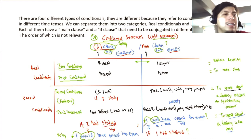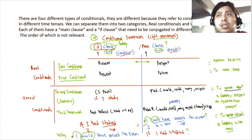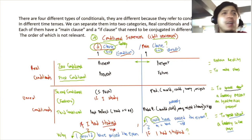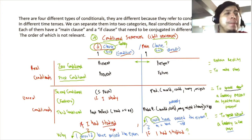The second and third conditionals are a bit more difficult because they deal with hypotheticals. The second conditional is for a hypothetical present — 'if I were, if I had, if I did' — right now I don't, but if I did. The third conditional is for the past — 'if I had had, if I had wanted' — things that already happened but you're imagining how they could have been different.